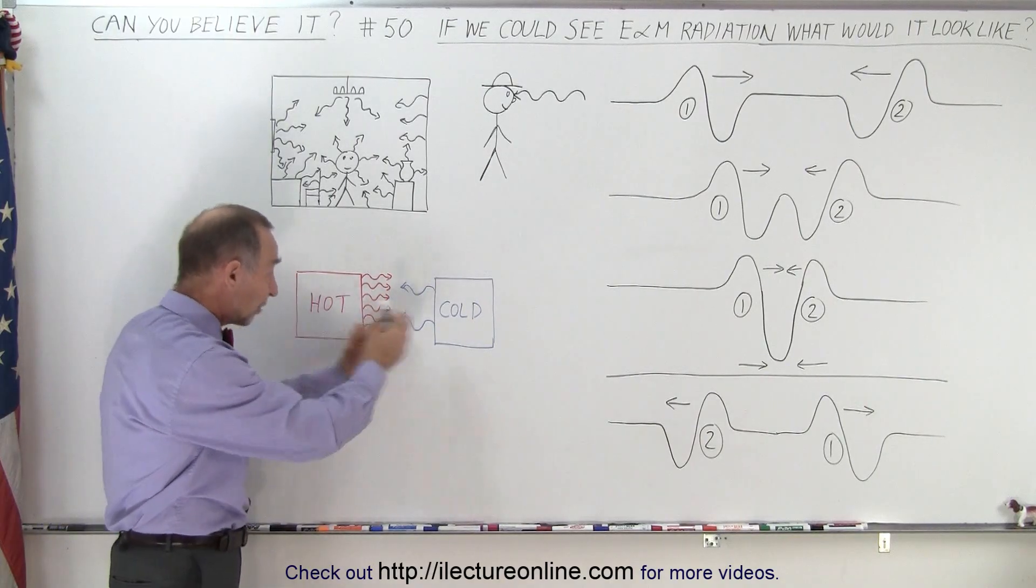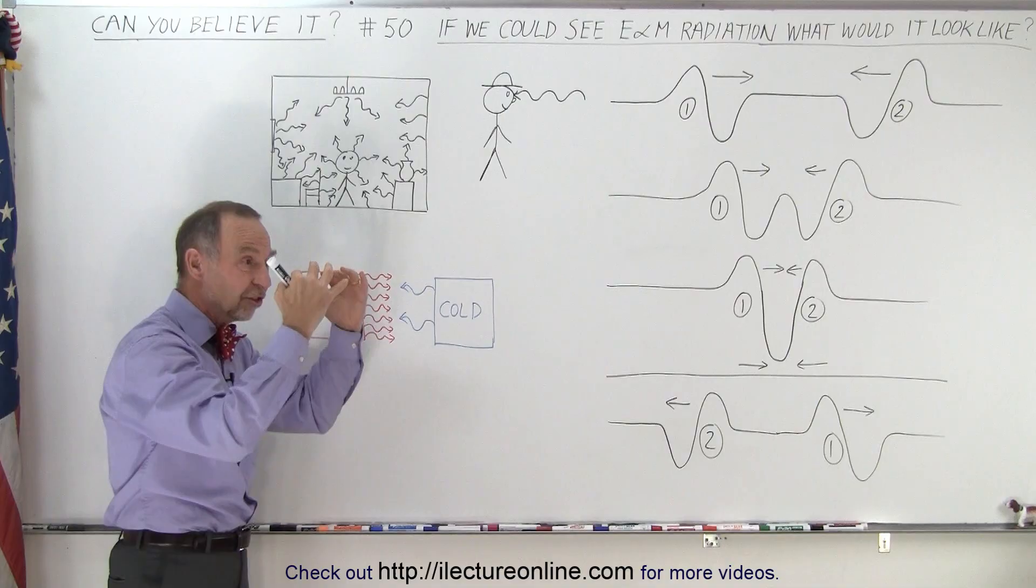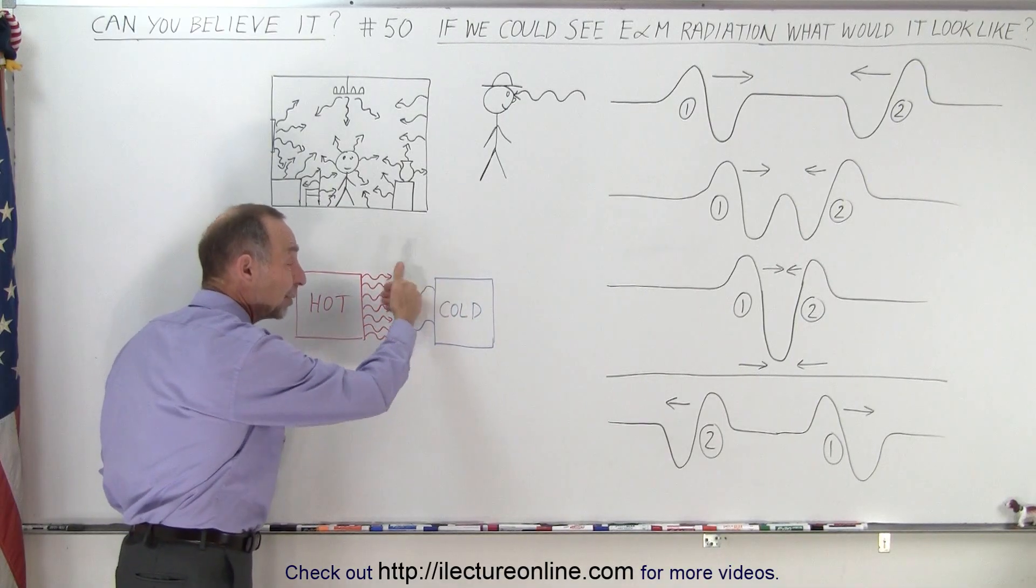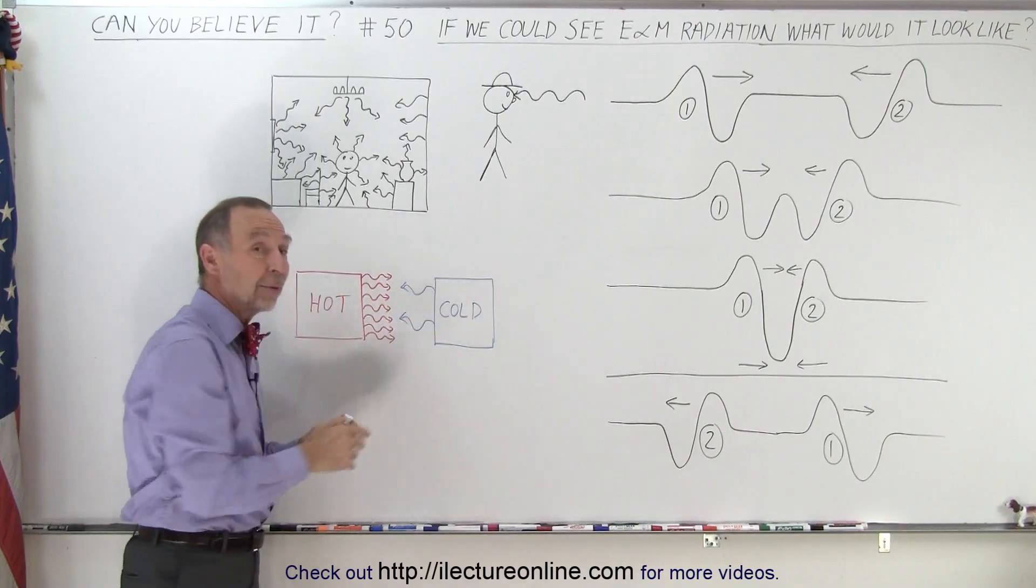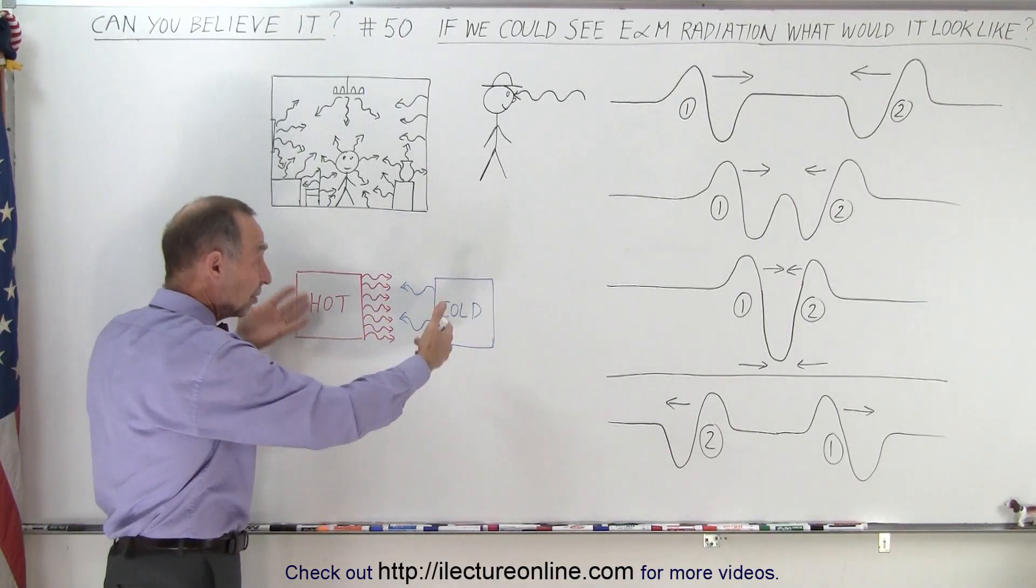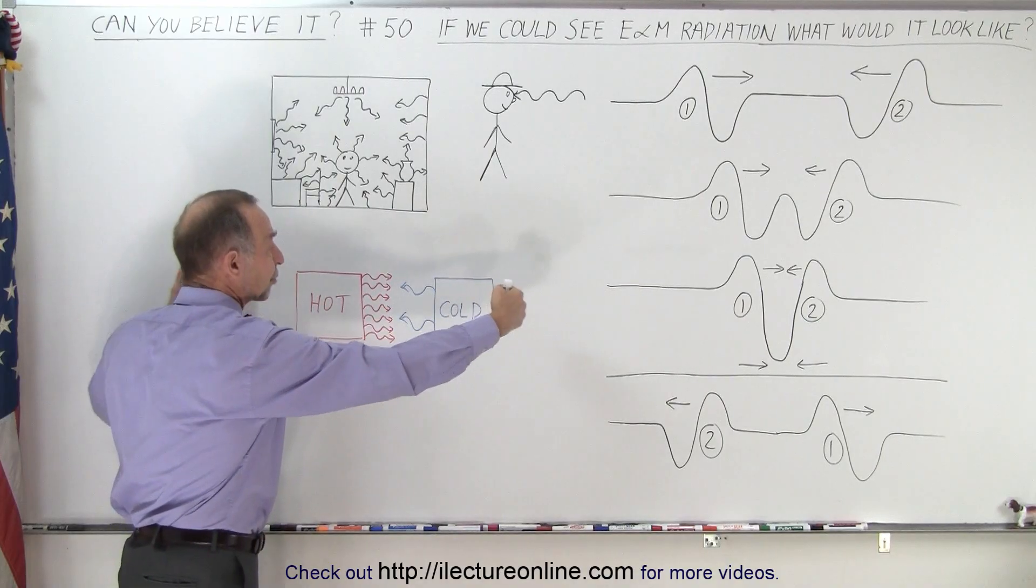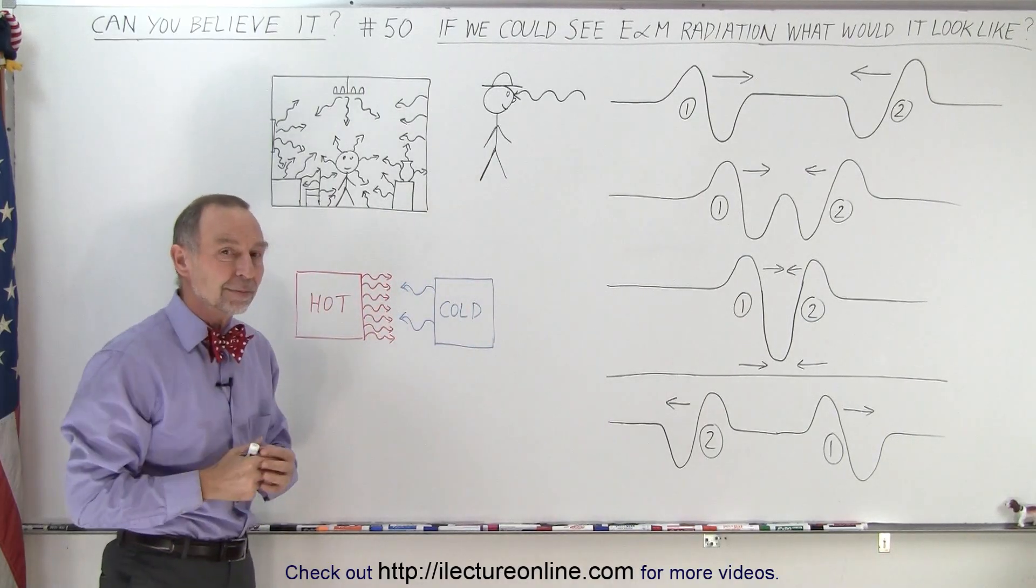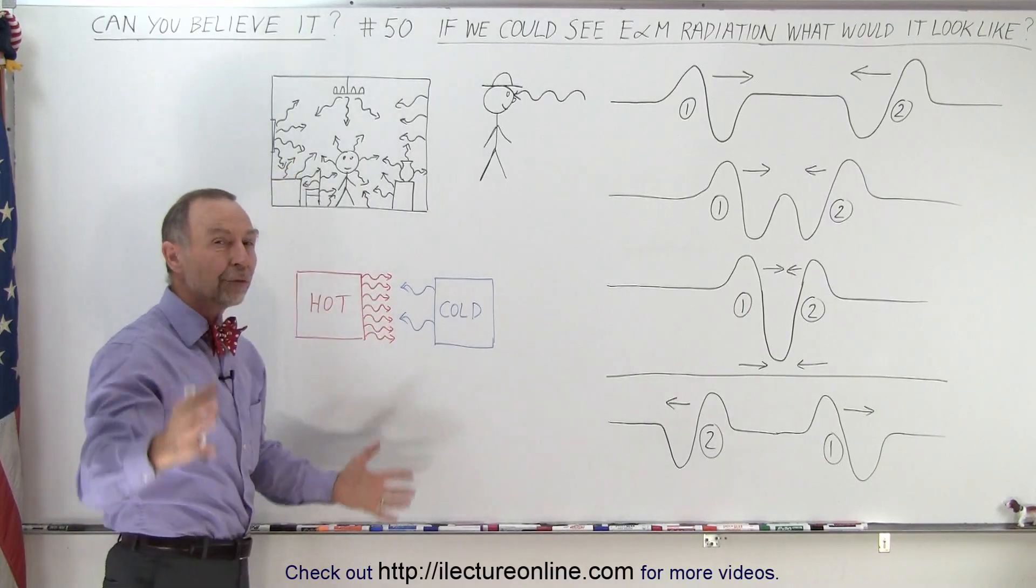And as the hot object puts out lots of radiation, it loses its energy and it cools down. The cold object puts out a little bit of radiation, but it receives a lot of radiation from the hot objects around it, so it heats up, and this continues until they're both at the same temperature, and they both just keep exchanging energy, but now they're at the same temperature.